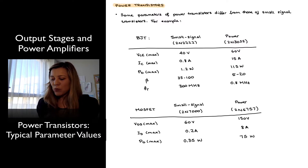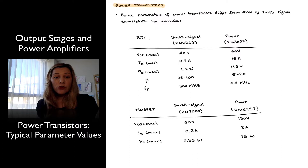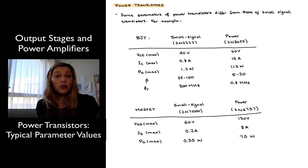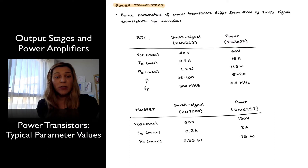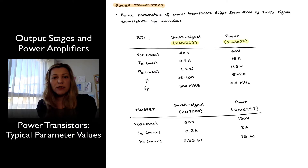The first table compares a small signal BJT to a power BJT for a couple of those parameters. The second table compares a small signal MOSFET to a power MOSFET. It needs to be understood that these are just for purposes of illustration. Within the small signal family and the power family of transistors, there's going to be some variation from transistor to transistor. But these are parameters we expect will have significantly different values. Let's compare the small signal BJT 2N2222 to the 2N3055, which is a power BJT.